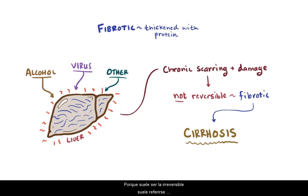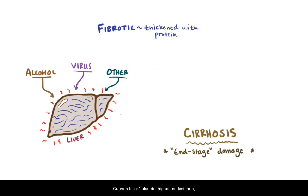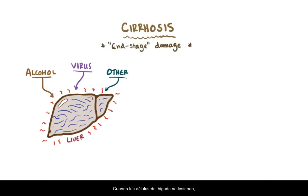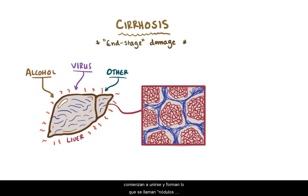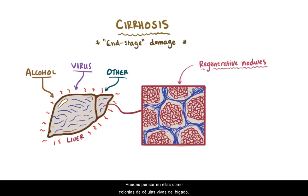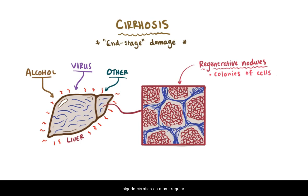Because it's usually irreversible, cirrhosis is often referred to as end-stage or late-stage liver damage. When liver cells are injured, they start to come together and form what are called regenerative nodules — you can think of these as colonies of living liver cells. These are one of the classic signs of cirrhosis and are why a cirrhotic liver is more bumpy as opposed to a smooth, healthy liver.